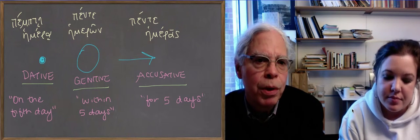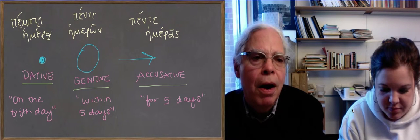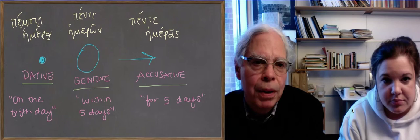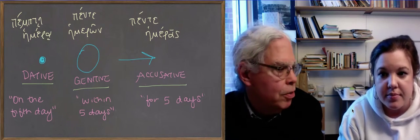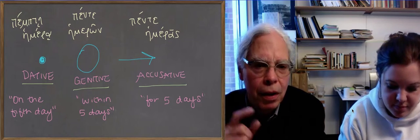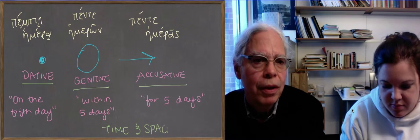So these are the three expressions, and these are the ways you do it. Pente hemera, the dative of time, on the fifth day. Pente hemeron, within five days. Pente hemeras, for five days. So it's all embedded in the case system, and the key thing is the light bulb goes off in your head. Oh, time words.